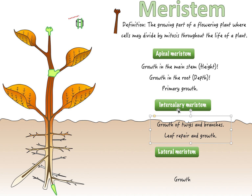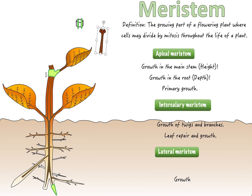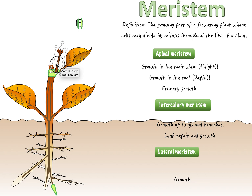The intercalary meristem doesn't cause height or depth — it causes branches and twigs to grow, more branching, and helps repair and grow leaves. Now, if you were to cut this plant right here, it would have no apical meristem. So now the plant will only grow from the intercalary meristem, which will become the new growing point — growth will happen from there instead.